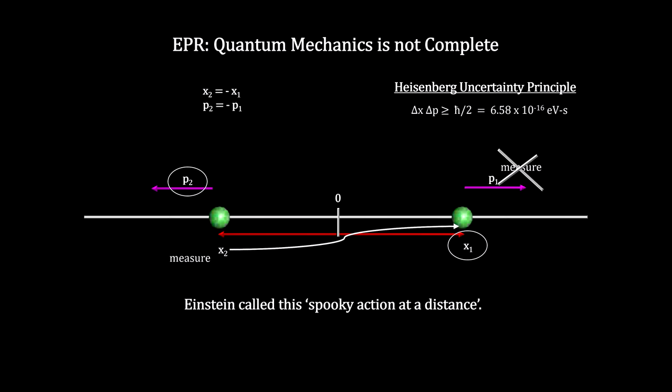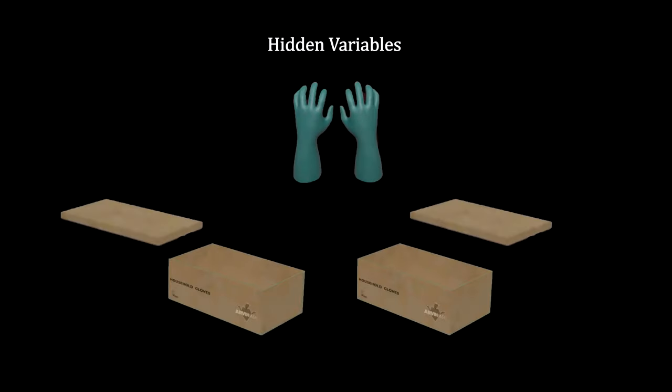Einstein proposed that there are hidden variables at play that determine the state of particles like these in advance. One of his examples went like this.